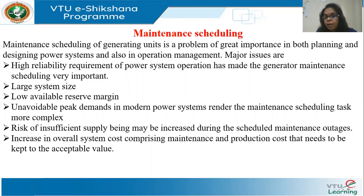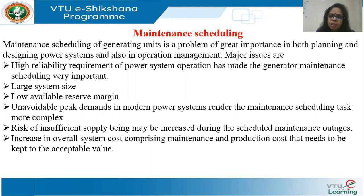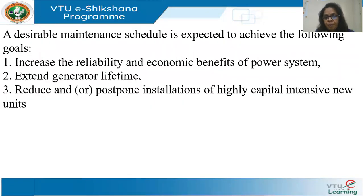In modern grids, because of the nature of the loads, sudden peak demands come on the system. This makes scheduling for maintenance a difficult and complex task, because during maintenance you may be able to meet the base load, but you may not be able to meet a sudden peak load which occurs. Insufficient supply may be increased during scheduled maintenance outages, and of course cost — everything involves cost. These are some issues which have to be borne in mind when the system is maintained.